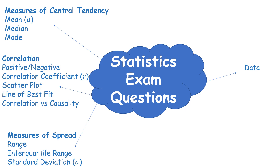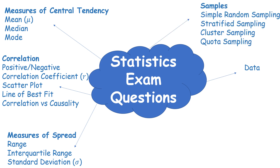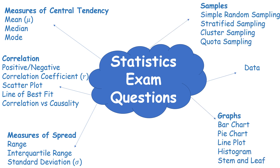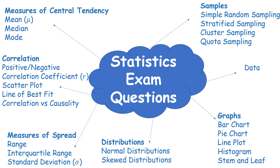We also have correlations — positive or negative — and the correlation coefficient. Within that we have the scatter plot, and we can plot a line of best fit. We're often asked about correlation versus causality. We'll also look at different types of sampling, and there are five main charts: bar chart, pie chart, line plot, histogram, and stem and leaf. Finally, we'll look at distributions — the normal distribution, which is symmetrical, and some skewed distributions.